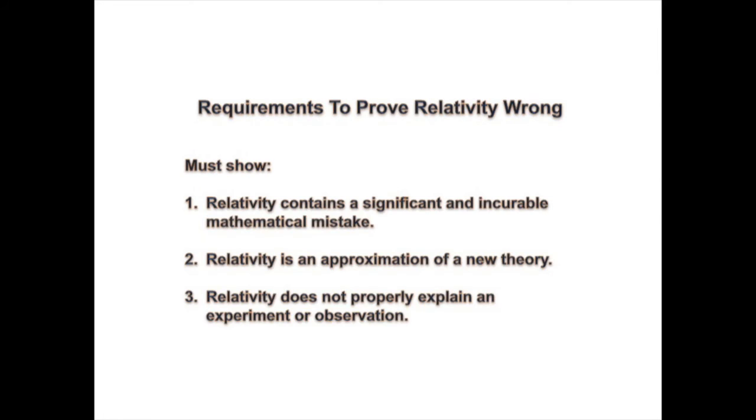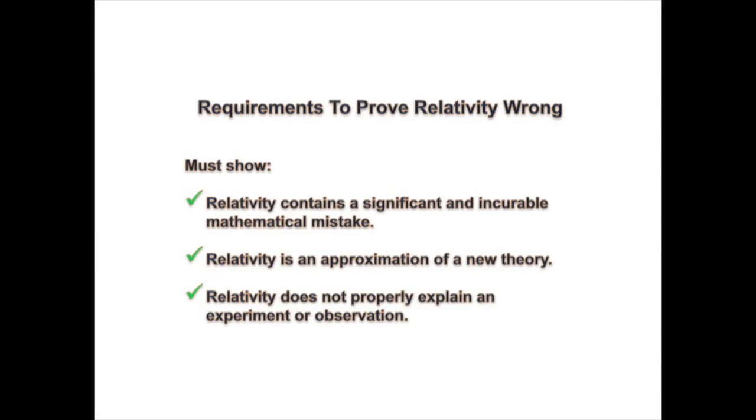So in the last three episodes, I satisfied the three requirements that show relativity is a failed theory. I showed that Einstein's spherical wave proof fails, which mathematically invalidates his theory. Then I showed that relativity is a close approximation for modern mechanics. This is important because it means that relativity is no longer unique in its ability to explain certain experiments and observations. And today, I showed that relativity fails to explain the Michelson-Morley experiment, which invalidates the theory on experimental grounds.